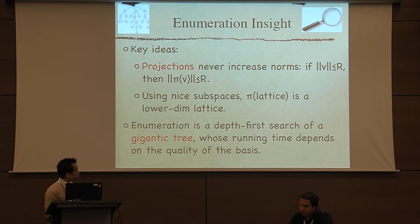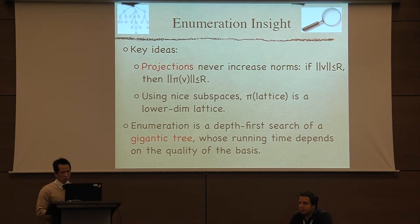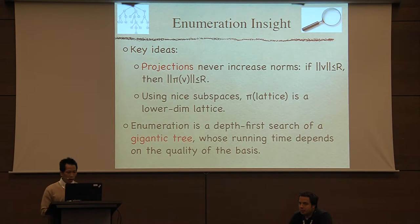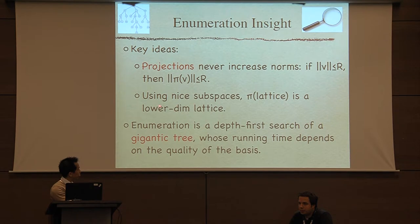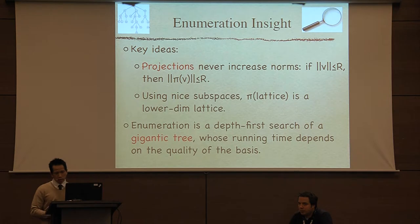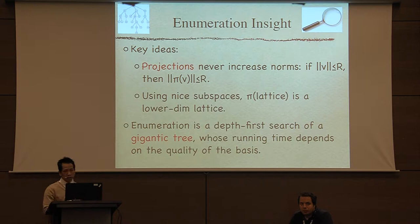The key idea behind enumeration is to project. When you project, you never increase the norms. Unfortunately, when you project a lattice, it may not be a lattice anymore. However, if you project onto nice subspaces, it's still a lattice with lower dimension. If you project well, you come back to a one-dimensional lattice where enumeration is very easy. So you do a depth-first search of a gigantic tree, and at the lower level you have a one-dimensional lattice, then you lift it step by step.